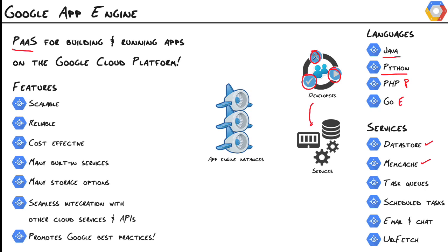If you need to do any processing outside of a request, we have task queues — both push and pull. We have scheduled tasks, also known as cron jobs. Email and chat functionality is built right in. And if you need to do any external resource fetching, we have URL fetch. That's just a small sampling of some of the services that App Engine provides.